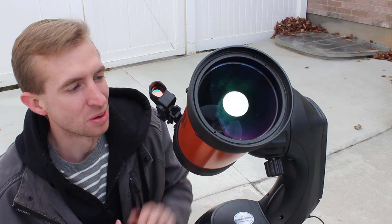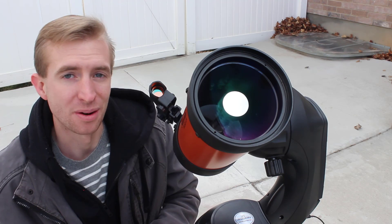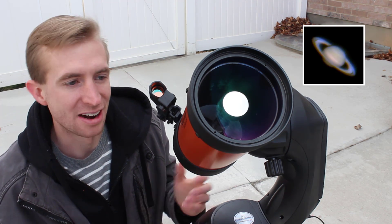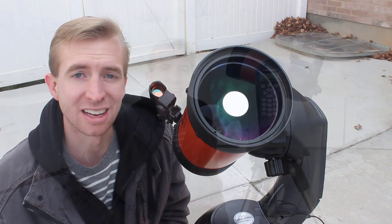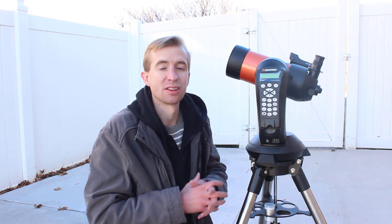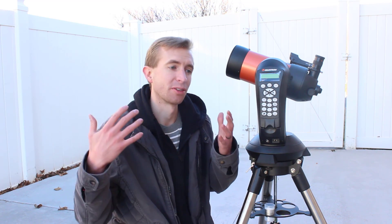So the Nexstar 4SE is an awesome option for beginners that are looking for high-powered views of the planets. They want to see the belts on Jupiter and the rings of Saturn. The 4SE can provide that in a very small portable package. A great thing about the 4SE is it allows you to learn and grow with your telescope and desire to learn more about the night sky. As you use the 4SE, you might want to upgrade to a bigger telescope that gives you more aperture so you can see more.